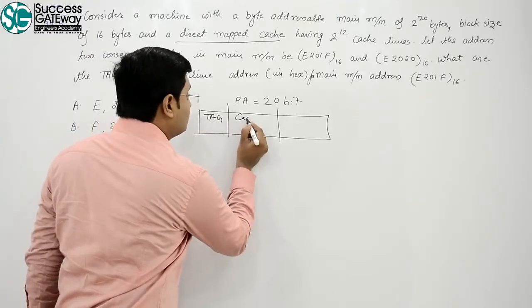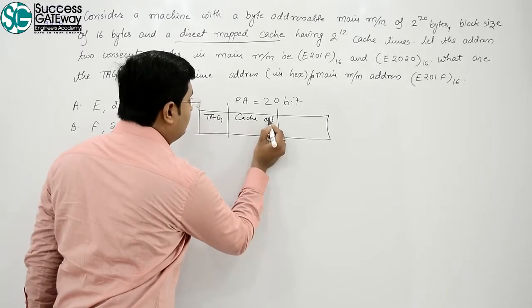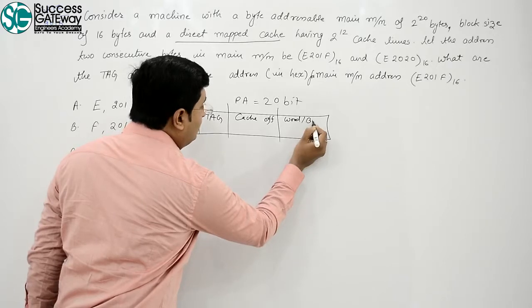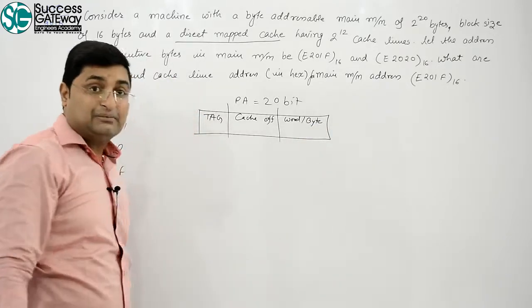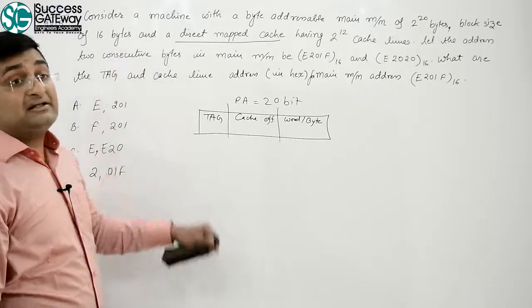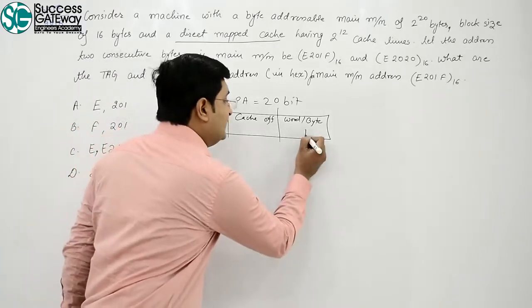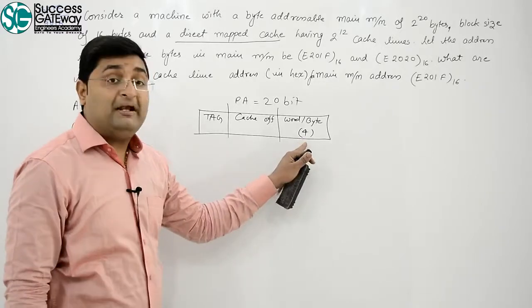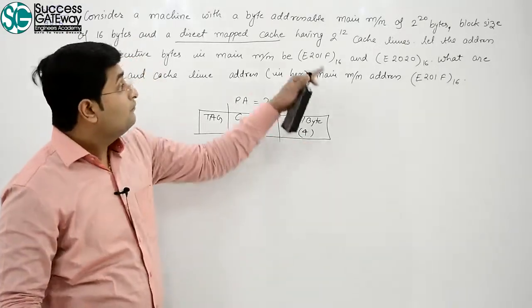One is tag. Second is cache offset. And third is word or byte offset. Bats samaj mahi, how many bytes in a block? That is 16, 4. Bats samaj mahi, 4 bit for byte offset.